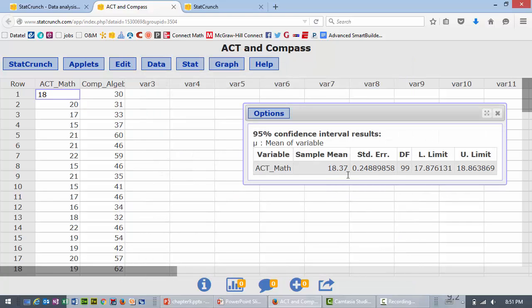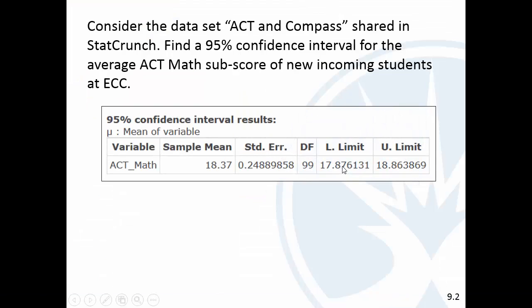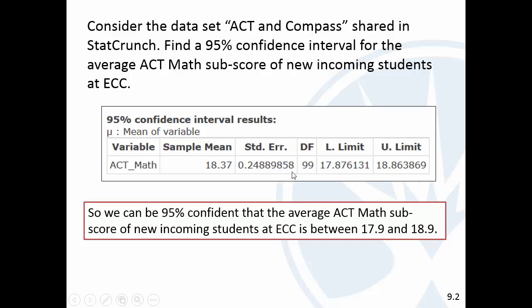And so, the sample mean was 18.4. And with the degree of freedom pretty high here, a large sample size, we're pretty confident that it's between 17.9 and 18.9. So, pretty narrow confidence interval there, because the sample size is so large. So, we can be, well, the sample mean is 18.4, and with a sample size of 100, we're pretty sure that we're plus or minus, what would that be? 0.5. So, we're pretty 95% confident that the average ACT math subscore is between those two.